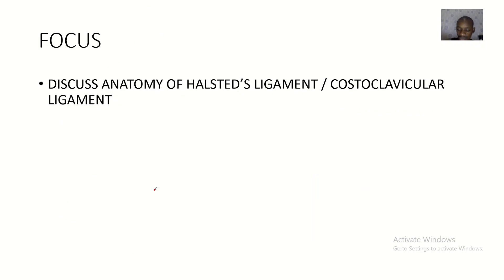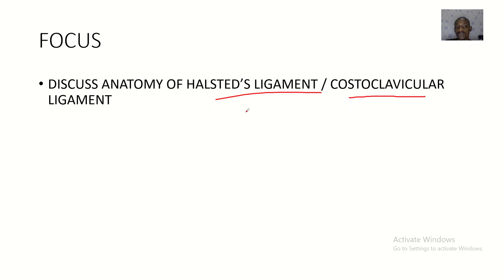We're looking at a very important ligament of the upper limb — the Halstead ligament, also known as the costoclavicular ligament. I always emphasize to my students that there's a logical way of reasoning out anatomy. If you hear 'Halstead ligament,' you have no idea, but if you hear 'costoclavicular ligament,' it tells you: costal means ribs, clavicular means clavicle — so it runs from the ribs to the clavicle.